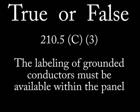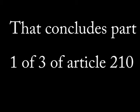Last question, number 10: Article 210.5 paragraph C, subsection 3 — the labeling of grounded conductors must be available within the panel. That concludes the first third of Article 210.